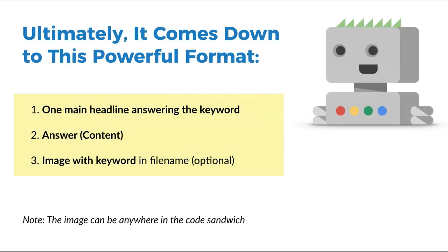Ultimately it all comes down to one powerful format. We're always doing one thing: answering the keyword with our headline. Whatever the answer is becomes our headline. Then we answer the content — for 'how to tie a tie,' my sub-headline will be 'this is how you tie a tie,' and in the answer I say step one do this, step two do this, step three do this. Then I include an image with the question as the file name. Every single answer revolves around this formula: one main headline, an answer, and an image with the file name. Put it near the top for more priority.